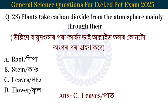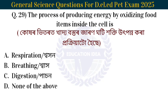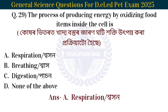Next question: The process of producing energy by oxidizing food items inside the cell is called? The process of producing energy by oxidizing food inside the cell is cellular respiration.